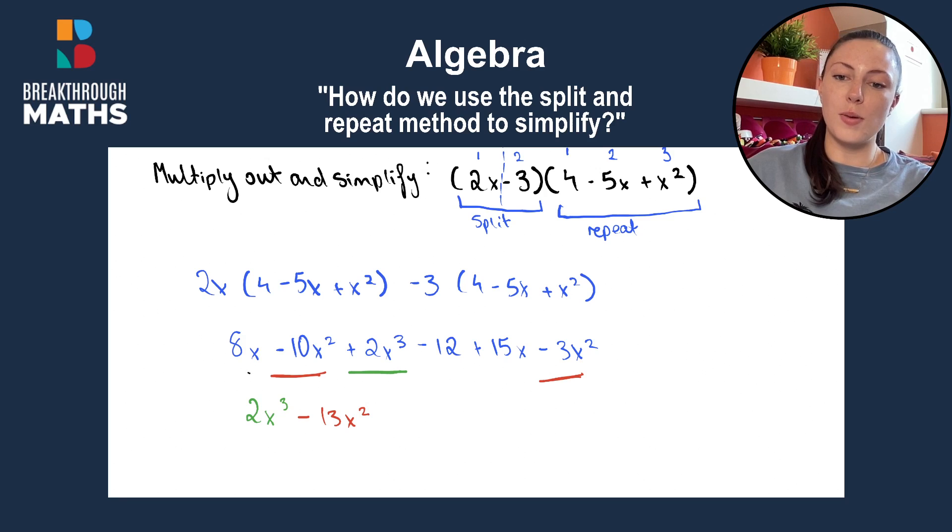Now we'll look at our x's. So we have plus 8x and plus 15x, and this gives us plus 23x. And we're left with our final term here, minus 12. And we add that in. So our final answer is 2x cubed minus 13x squared plus 23x minus 12, using the split and repeat method.